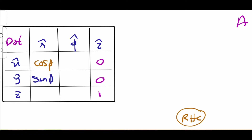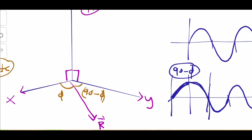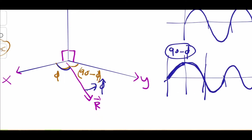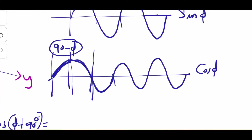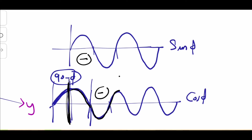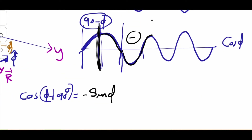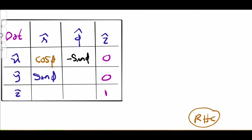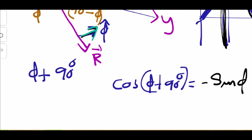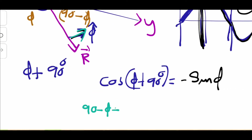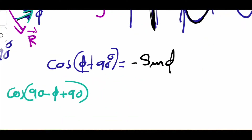Now let's find x̂·φ̂. The φ̂ direction is perpendicular to r̂, so it is at angle phi plus 90 degrees from the X axis. Therefore x̂·φ̂ equals cos(phi + 90). Shifting a cosine by 90 degrees gives a negative sine function, so x̂·φ̂ equals −sin(phi). For ŷ·φ̂: ŷ is at 90 minus phi from r̂, and φ̂ adds another 90 degrees, giving a total angle of 180 minus phi.